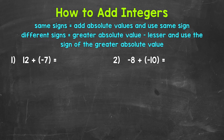Let's jump into number 1 where we have 12 plus negative 7. We'll start this problem by taking a look at the signs. We have a positive 12 and a negative 7, so we have different signs — a positive and a negative. Since we have different signs, we are going to take the greater absolute value and subtract the lesser. Our answer will take the sign of the greater absolute value.